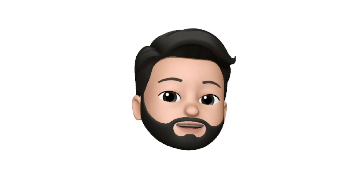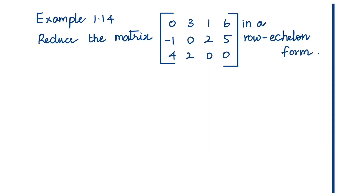Hi, welcome to this video. We will see Example 1.14 - reduce the 3×4 matrix to row echelon form. We will convert a 3×4 matrix to row echelon form.